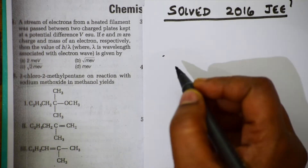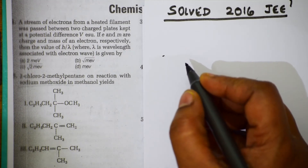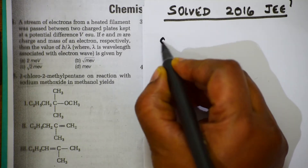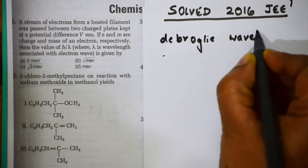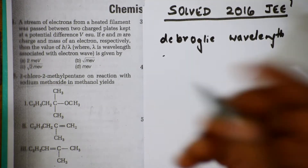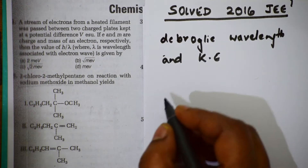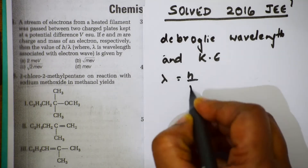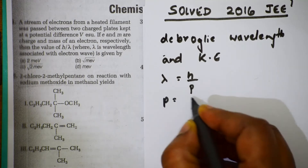H by λ — we learned this from de Broglie's wavelength. Let's recollect: according to de Broglie, λ = H/P. If I rearrange, P = H/λ, which is exactly the quantity I need to find.